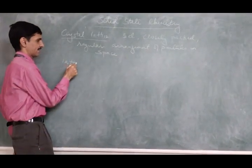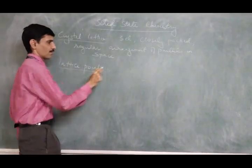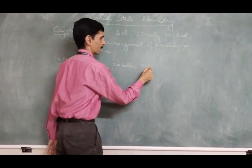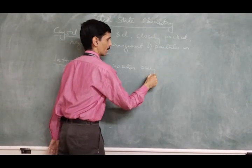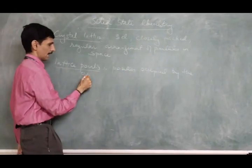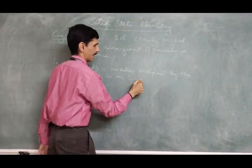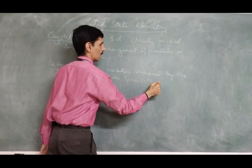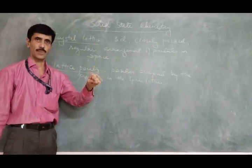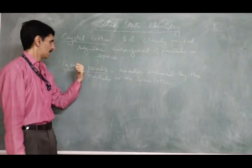Next we talk about lattice points. In simple words, it is the position occupied by the particles in the space lattice or crystal lattice. To repeat: it is the position which is occupied by the particles in the space lattice.